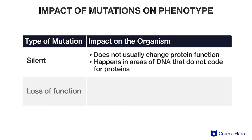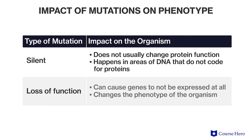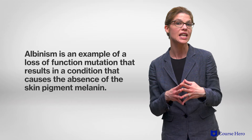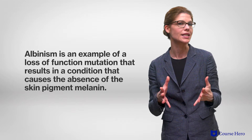On the other hand, a loss-of-function mutation may cause a gene to not be expressed at all, resulting in a change in the phenotype of the organism. An example of this type of mutation is albinism, a condition that causes the absence of the skin pigment melanin.